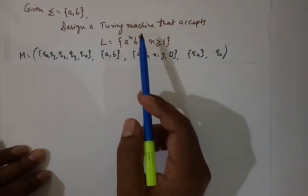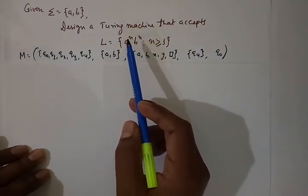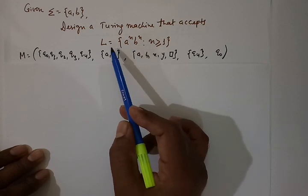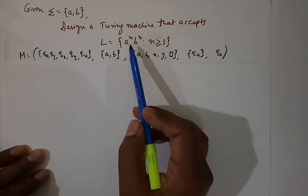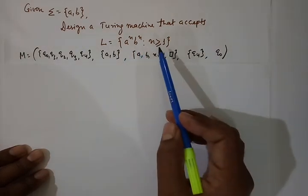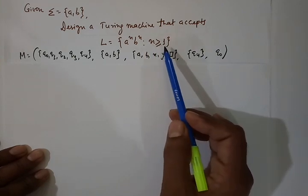In this lecture, we are going to discuss and design a Turing machine for the language L = a^n b^n, such that n ≥ 1.